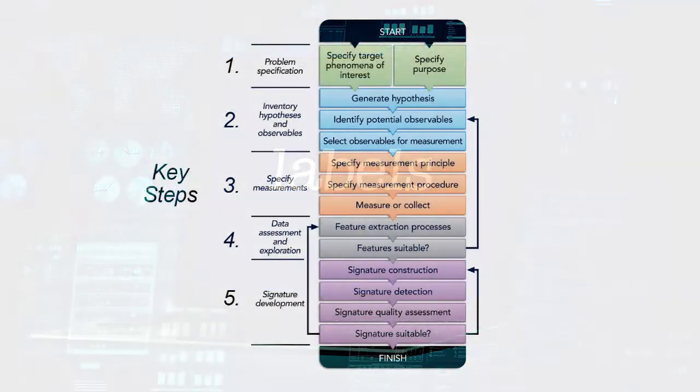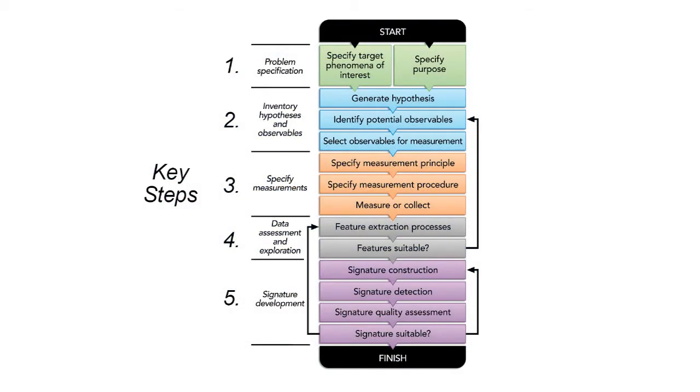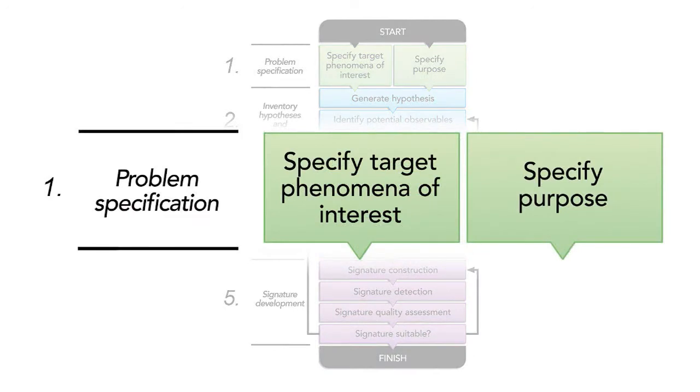So our signature discovery process involves five key steps. The first step, although obvious, is often the most difficult. We need to specify the problem. What is it that we're developing our signature for? What is it that we want it to do?